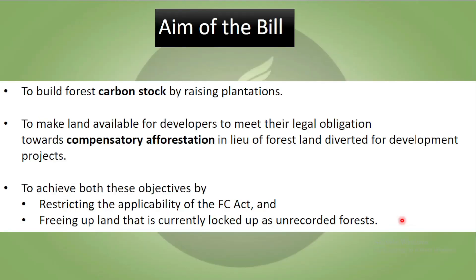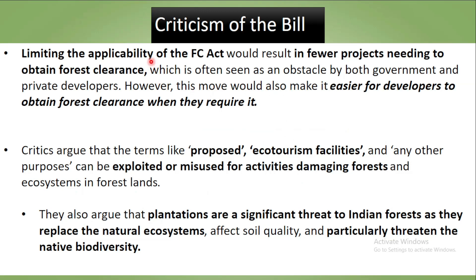The aims of the bill are: to build forest carbon stock by raising plantations; to make land available for developers to meet their legal obligation towards compensatory afforestation in lieu of forest land; and to achieve both these objectives by restricting the applicability of the Forest Conservation Act and freeing up land that is currently locked up as unrecorded forest. Criticism: it limits the applicability of the Forest Conservation Act, which will result in fewer projects needing to obtain forest clearance.